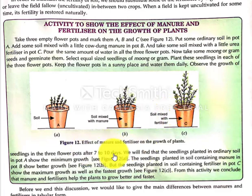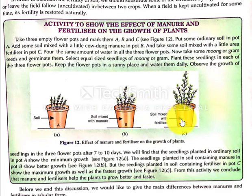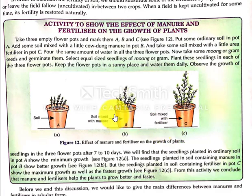After 7 to 10 days, we observe the growth of the seedlings: the first pot shows minimum growth, the second shows good growth, and the third shows maximum and fastest growth. The same experiment can be done in a field.